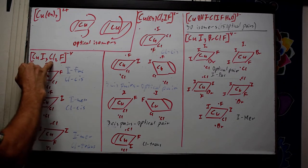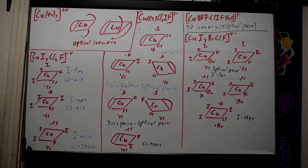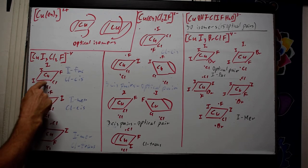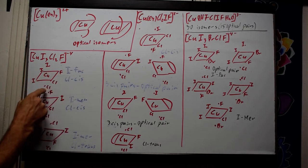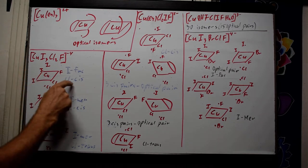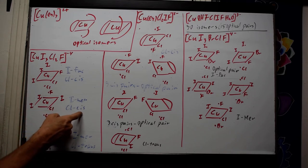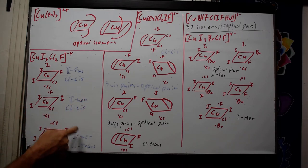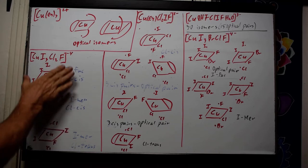If we have three of one ligand, two of another, and a single: for three we look for fac-mer; for two we look for cis-trans. Starting with fac of the iodine and placing chlorines, the chlorines end up cis to each other — it is impossible to get a trans chlorine arrangement under fac-iodine because the trans positions are occupied by iodines. When the iodines are mer, we can have the chlorines adjacent (cis) or on opposite sides (trans). So with mer-iodine we have both cis-chlorine and trans-chlorine, giving three total isomers for this compound.